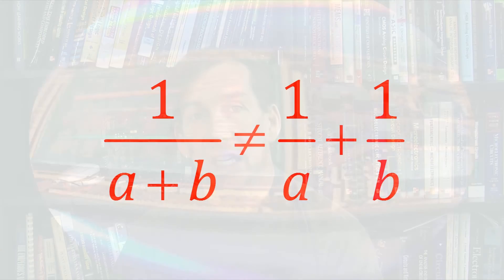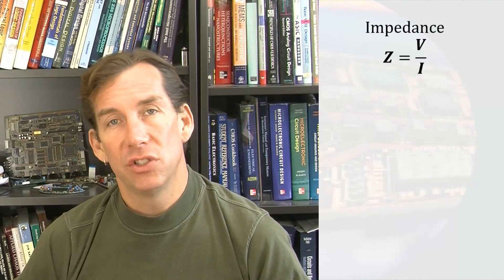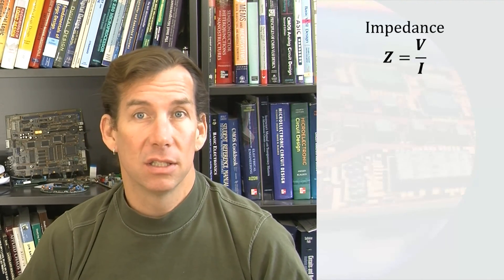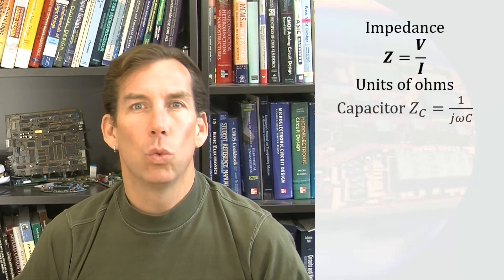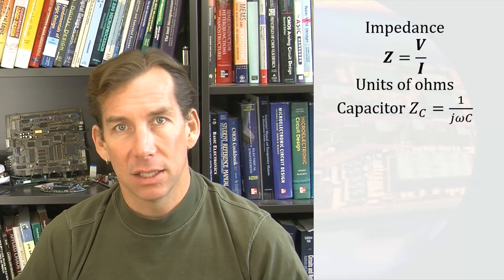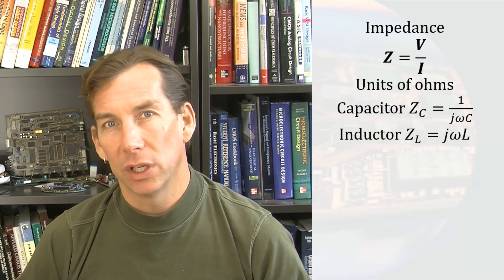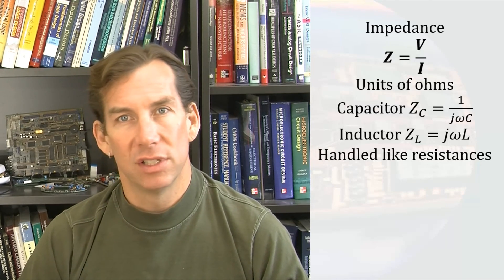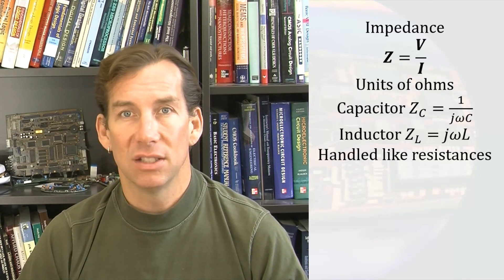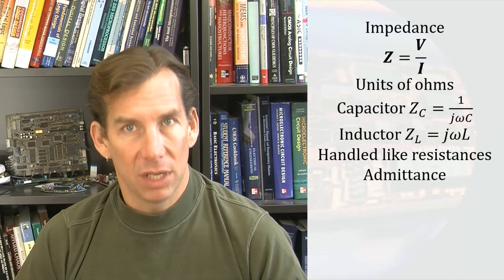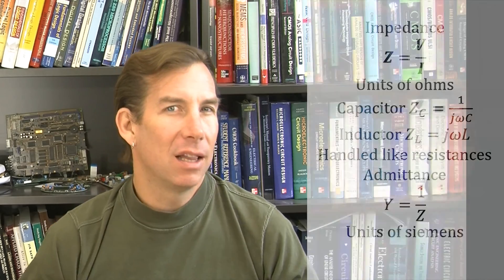Do not make this classic mistake: switching between impedance and admittance is slightly more involved than switching between resistance and conductance — you cannot simply take the reciprocal of each component separately. To review: impedance is defined as a ratio of phasor voltage to phasor current, valid for sinusoidal steady-state circuits, with units of ohms. The impedance of a capacitor is 1 over j times angular frequency times capacitance; the impedance of an inductor is j times angular frequency times inductance. Impedances are the complex version of resistances and are treated just like resistances in circuit analysis. The reciprocal of impedance is admittance, with units of Siemens. Impedances and admittances allow us to analyze sinusoidal steady-state circuits using the circuit analysis techniques we already know.